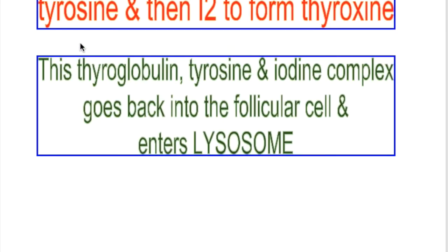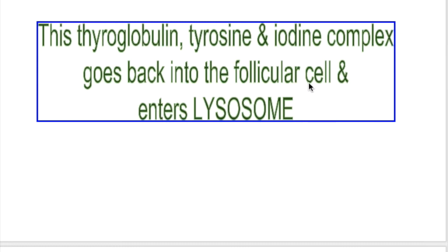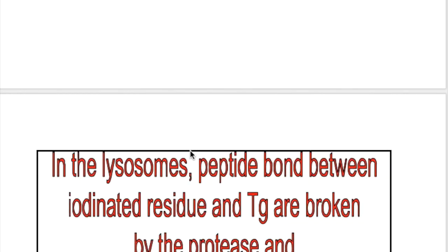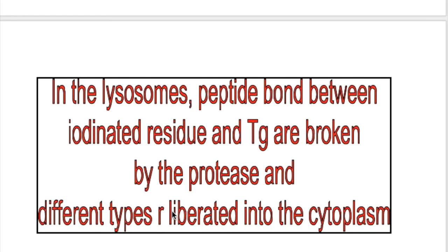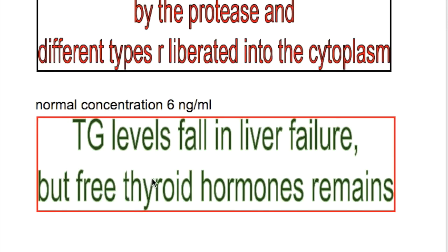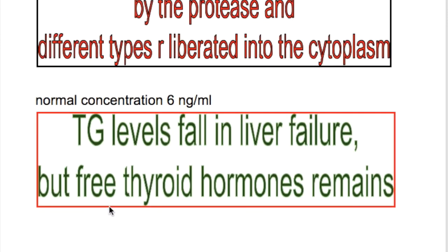How is thyroglobulin detached from thyroxine? The thyroglobulin, tyrosine, and iodine complex goes back into the follicular cell and enters the lysosome. In the lysosome, peptide bonds between the iodinated residues and thyroglobulin are broken by protease. T3 and T4 are liberated, and thyroglobulin is digested by the follicular cell. Notably, thyroglobulin levels fall in liver failure, but free thyroid hormones remain normal in that condition.